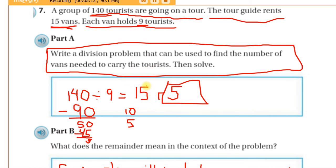Well, we got 15 for our quotient, but because there's a remainder, and that remainder represents people, then we know we need to add 1 to the quotient, so he will need 16 vans.